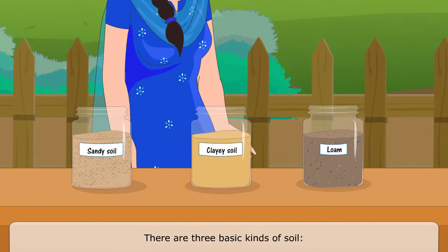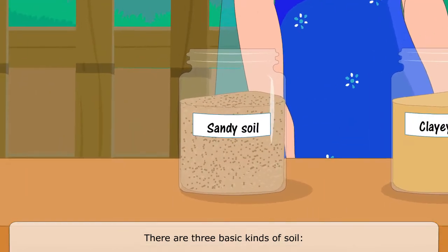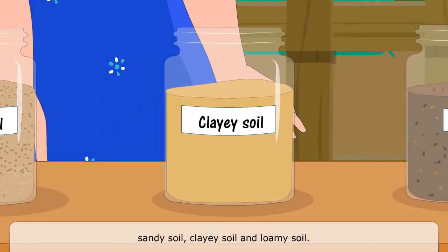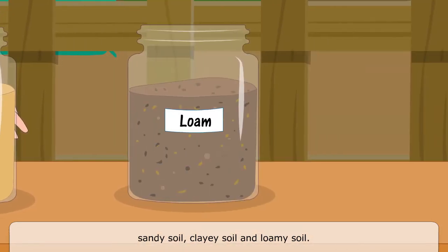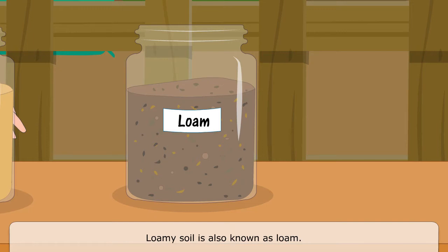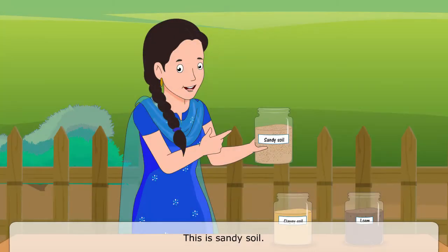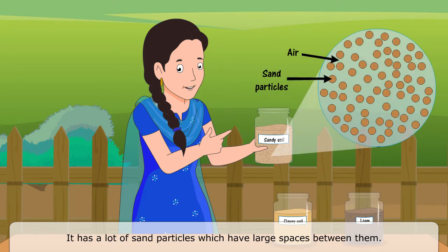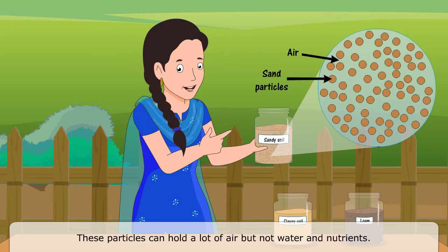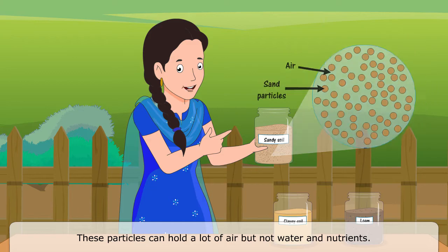There are three basic kinds of soil: sandy soil, clay soil, and loamy soil. Loamy soil is also known as loam. This is sandy soil. It has a lot of sand particles which have large spaces between them.